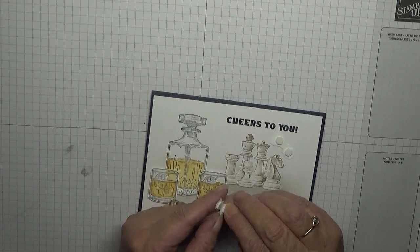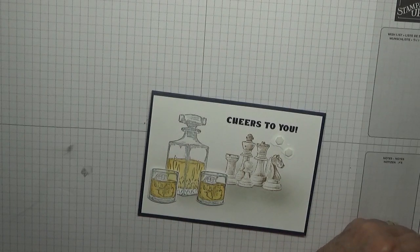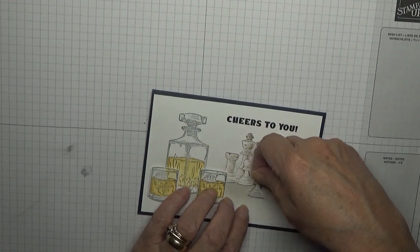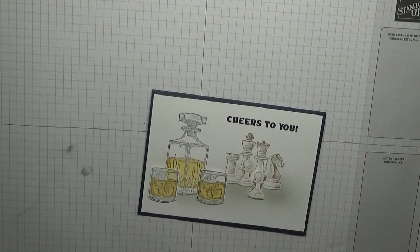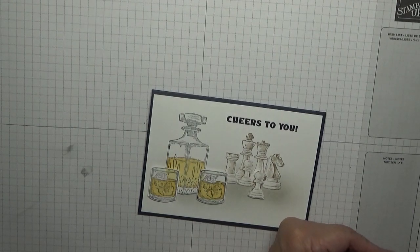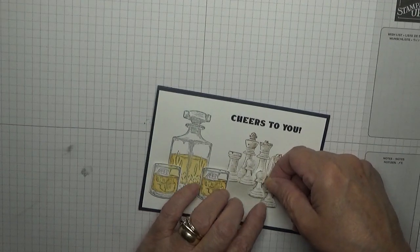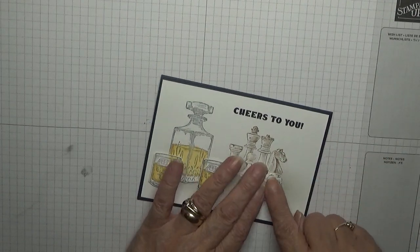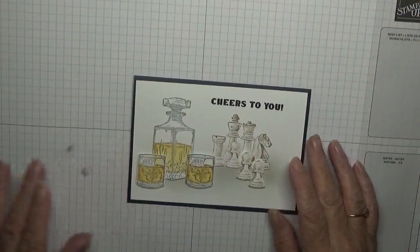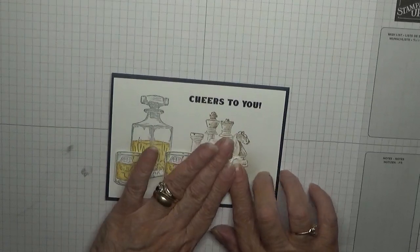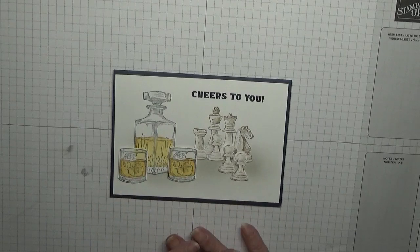Now the chess pieces, I'm going to put one there, and this one there. Sorry about that again. And that is our card made.